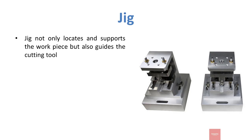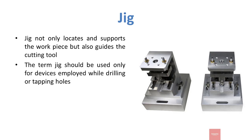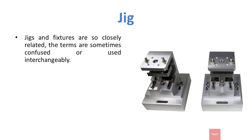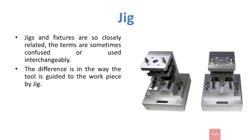Now we will discuss jig. Jig not only locates and supports the workpiece but also guides the cutting tool, which is the main difference between jig and fixture. The term jig should be used only for devices employed while drilling and tapping holes. It is not fastened to the machine on which it is used, while fixtures are usually attached to the machine table. The difference is in the way the tool is guided to the workpiece by jig.